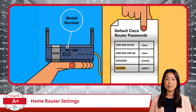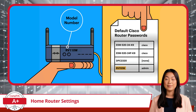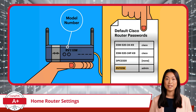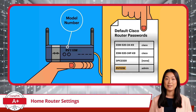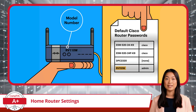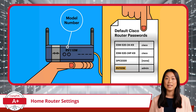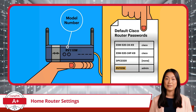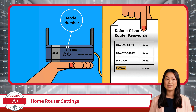First things first, your SOHO router is the bouncer of your network. It stands between your devices and the vast, wild internet, making it your first line of defense against potential intrusions. To protect this device from would-be attackers, a quick change to the default username and password should be performed as soon as possible. Most routers come with generic admin credentials that make it way too easy for hackers to gain access, so put it first on the list.